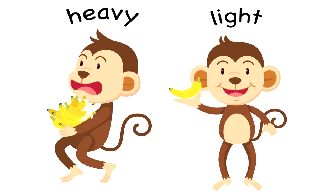The other monkey who has only one banana is feeling light on his hand. So the monkey with so many bananas is feeling heavy, and the other monkey has light weight on his hand.